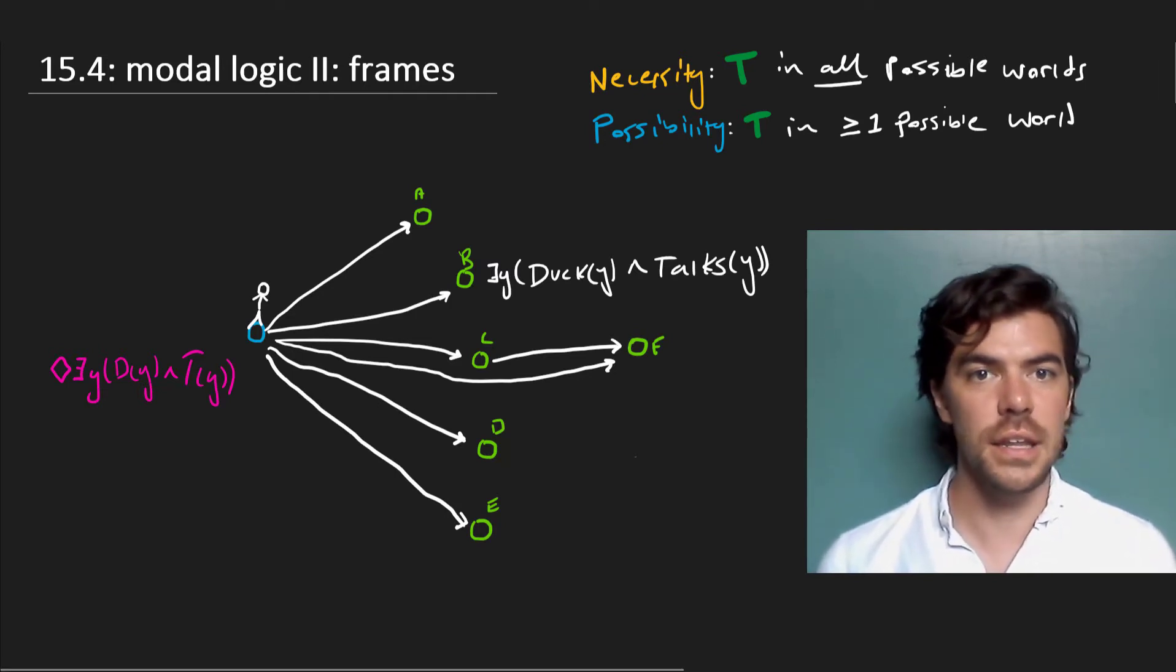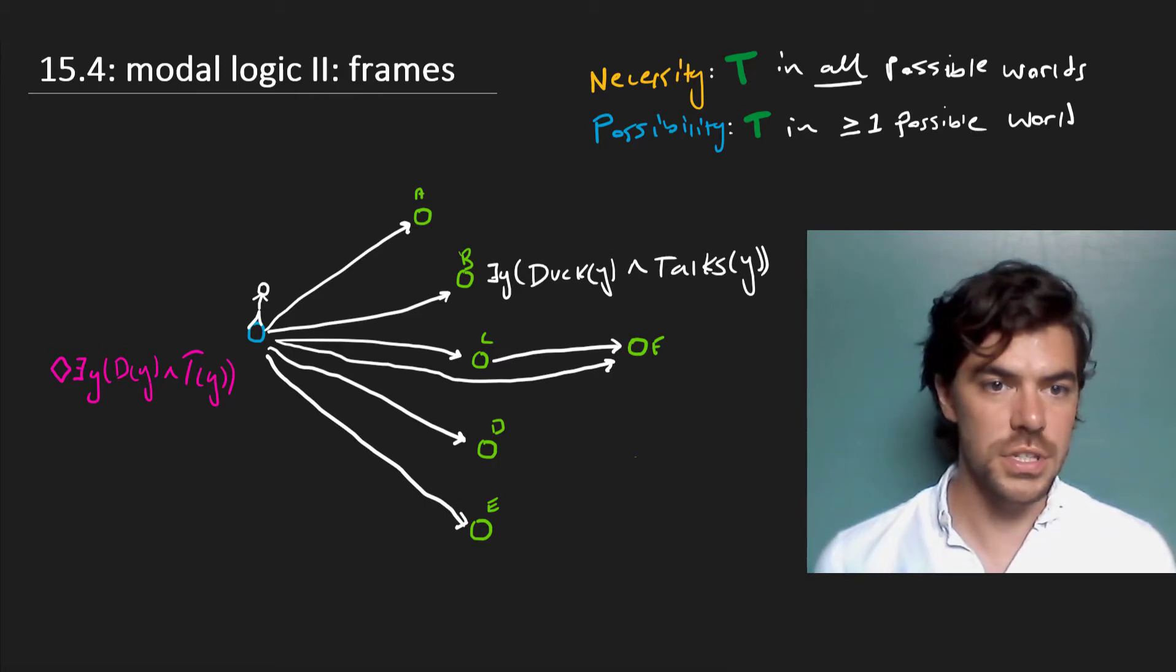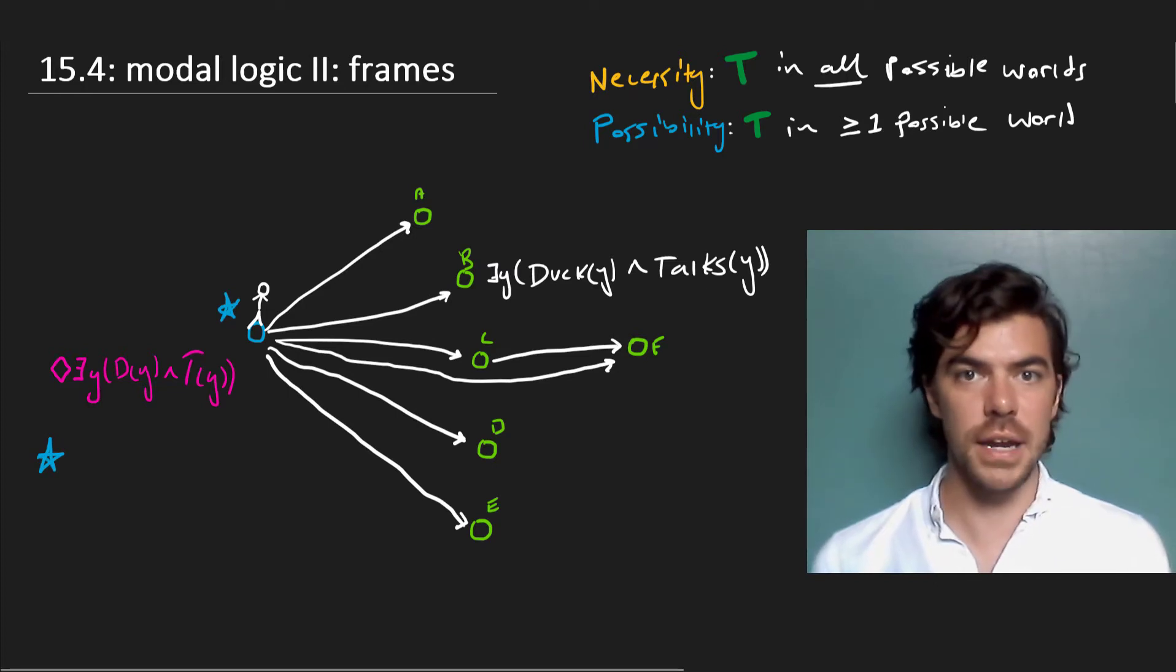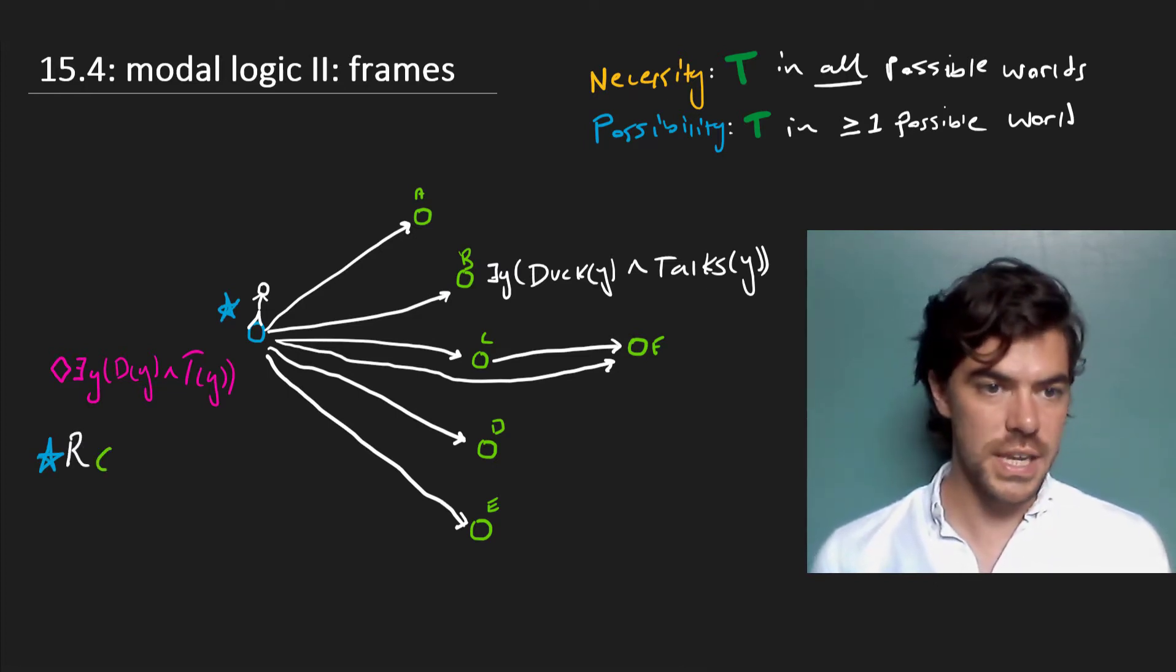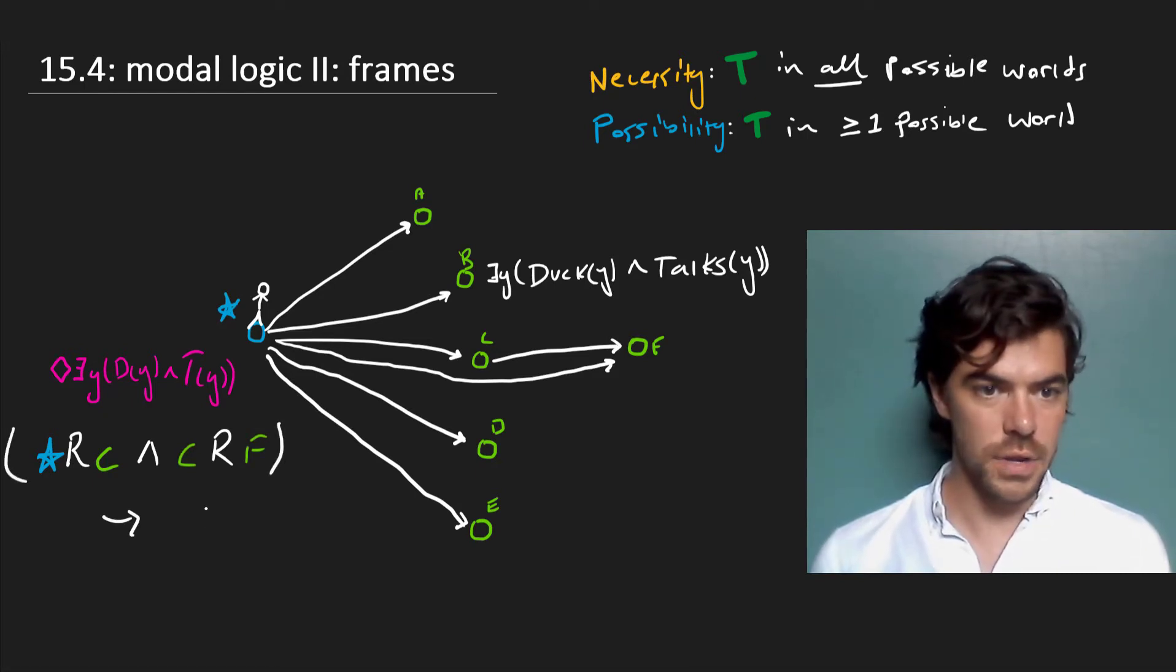So for instance, let's name our world world star. So calling our world star here, we can say that in a transitive frame, if star is related to a world C and moreover, C is related to a world F, then star is related to F.